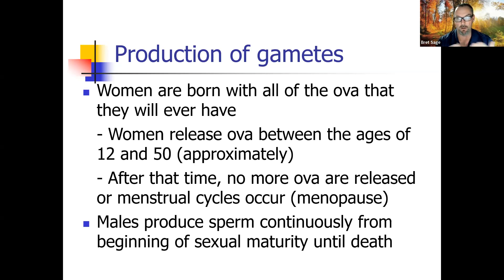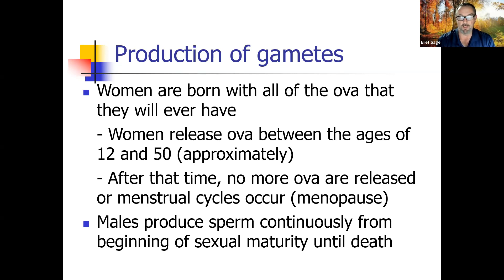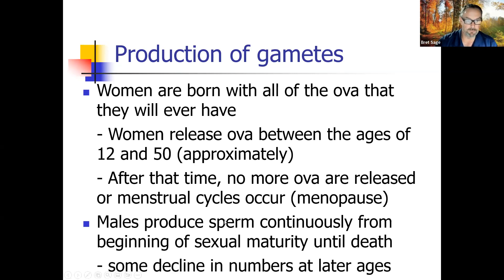Even 70- or 80-year-old men, if they can have an orgasm, their semen still has sperm cells in it, whereas women past 50 to 60 generally don't produce ova. Some decline in sperm numbers at later ages is usually correlated with a drop in testosterone levels associated with aging.